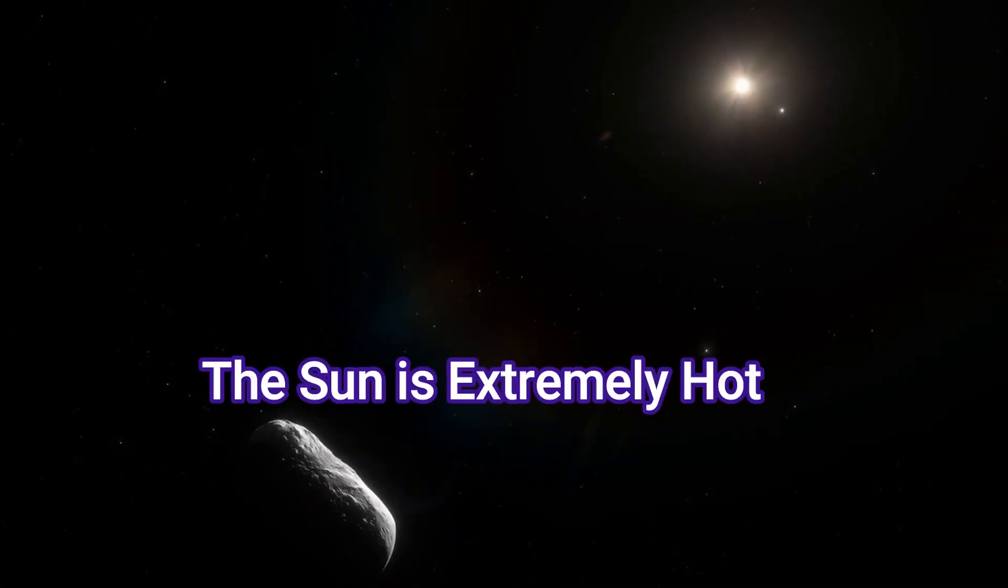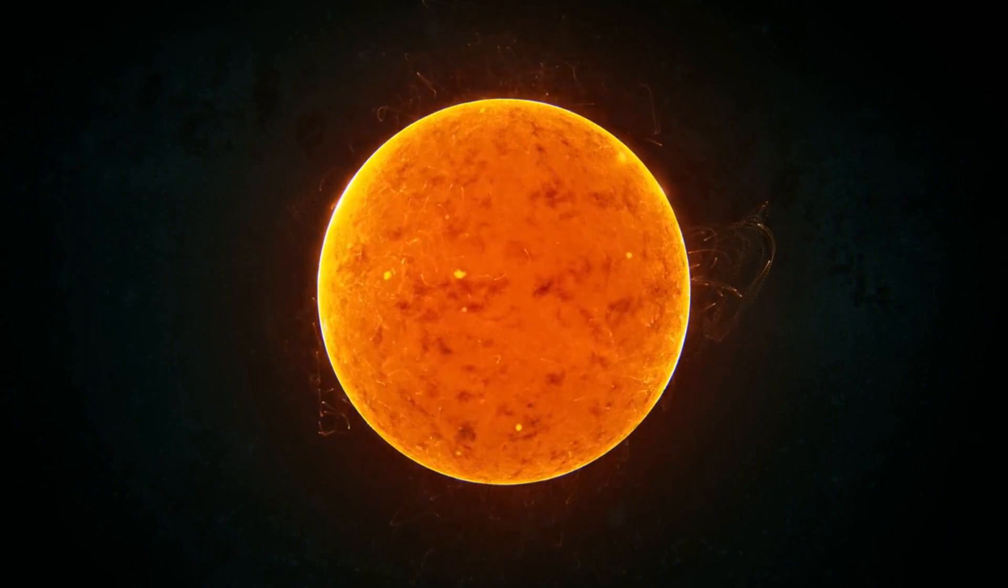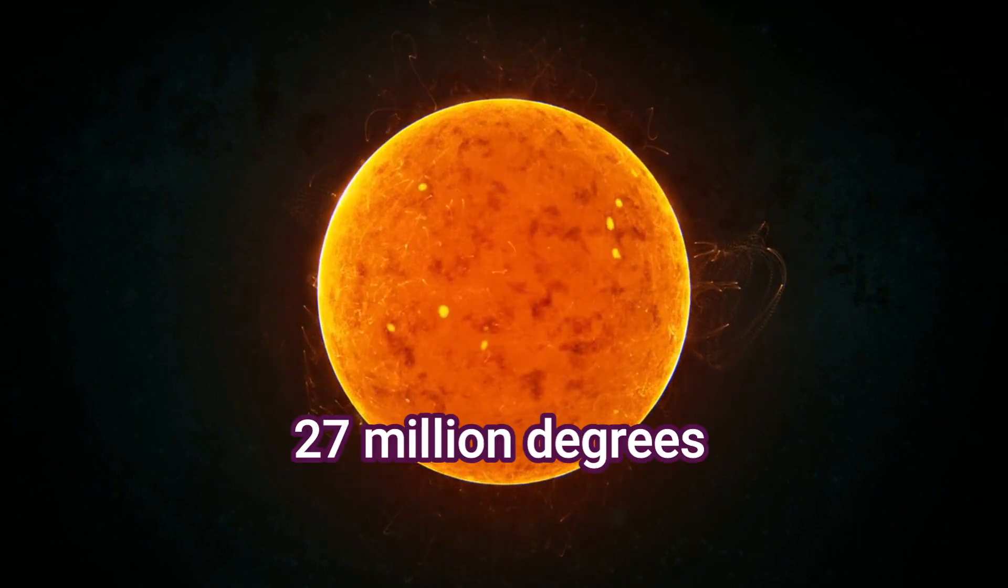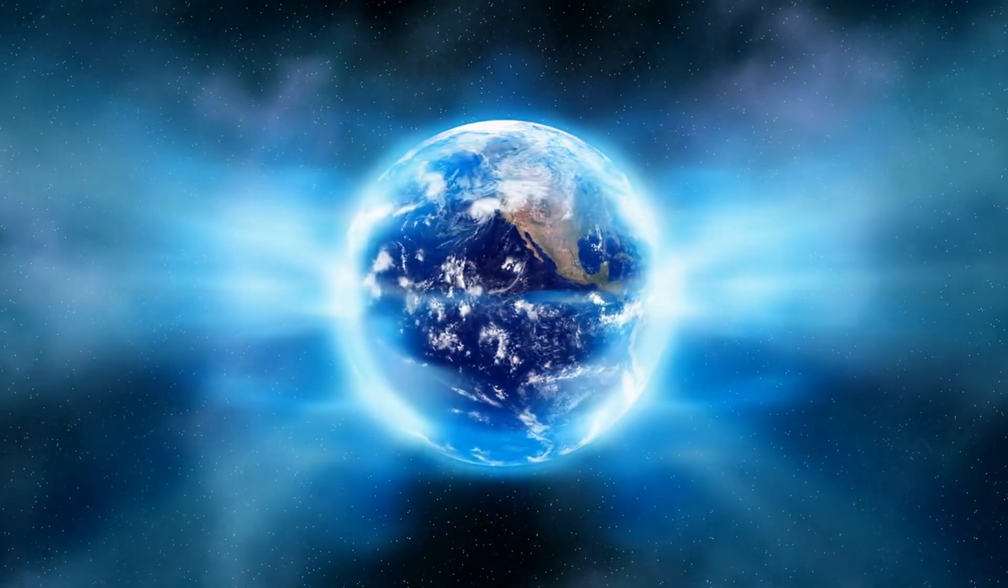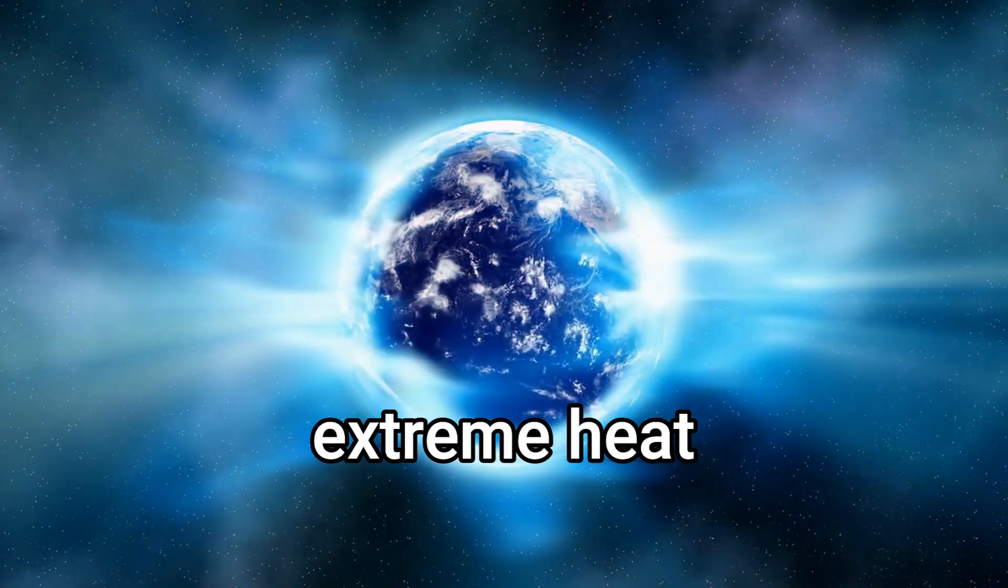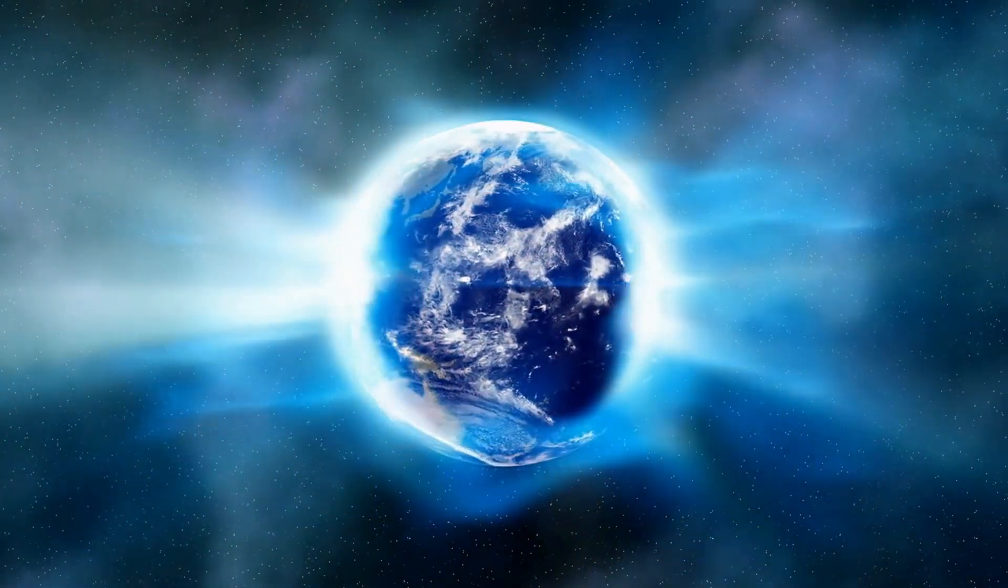Fact number two, the sun is extremely hot. The sun is an incredibly hot ball of gas, with temperatures that reach over 27 million degrees Fahrenheit at its core. That's hotter than any other known place in the universe. The extreme heat is what allows the sun to generate massive amounts of energy that are then sent out into space.